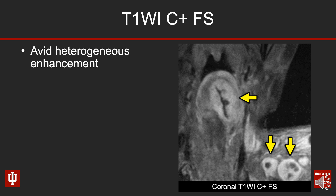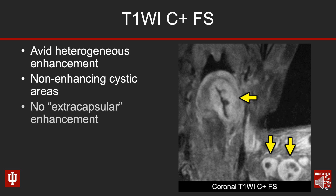Lastly, we have the coronal T1 post-contrast fat-saturated images. These masses were avidly but inhomogeneously enhancing — the areas that were T2-bright, the cystic or necrotic areas, are non-enhancing. Also keep in mind, looking at the margins and morphology, we don't see any extracapsular enhancement or infiltration into surrounding soft tissues. These look circumscribed and well-behaved.